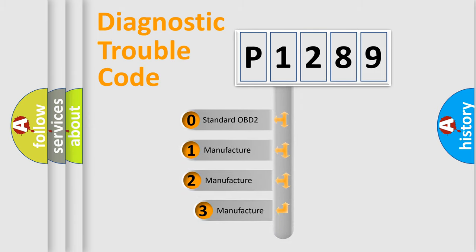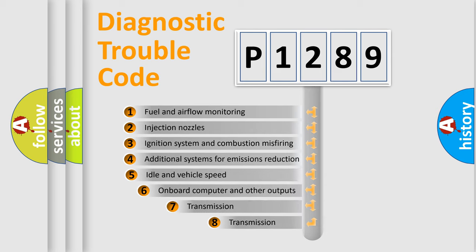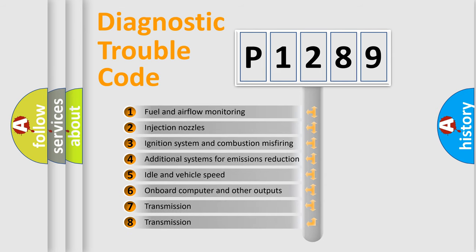If the second character is expressed as zero, it is a standardized error. In the case of numbers 1, 2, or 3, it is a more specific expression of the car-specific error. The third character specifies a subset of errors.